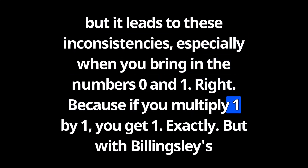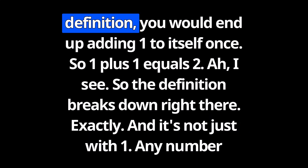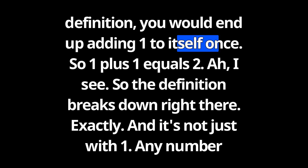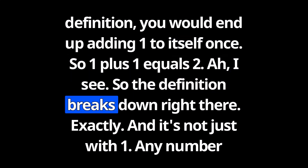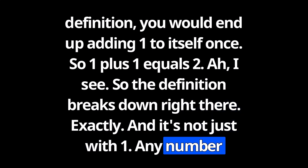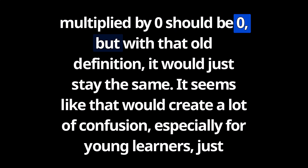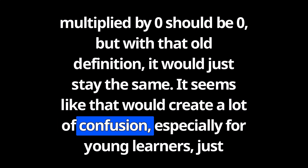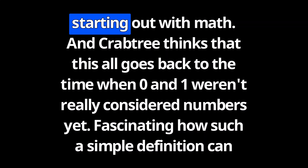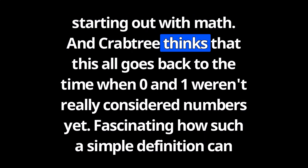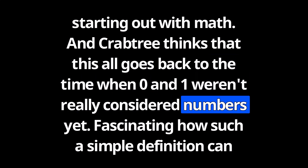If you multiply one by one, you get one. But with Billingsley's definition, you would end up adding one to itself once, so one plus one equals two. Any number multiplied by zero should be zero, but with that old definition it would just stay the same. That would create a lot of confusion, especially for young learners just starting out with math. Crabtree thinks this all goes back to when zero and one weren't really considered numbers yet.